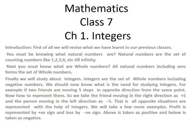We should now know what is the need for studying integers. For example, if two friends are moving 5 steps in opposite direction from the same point. Now how do you represent them? So we take the friend moving in the right direction as plus 5 and the person moving in the left direction as minus 5.